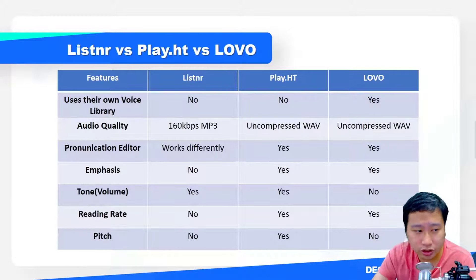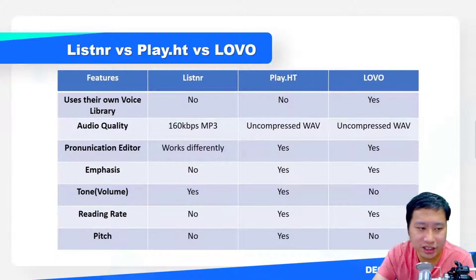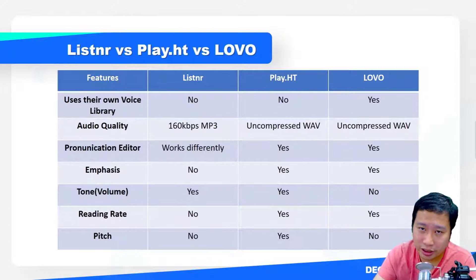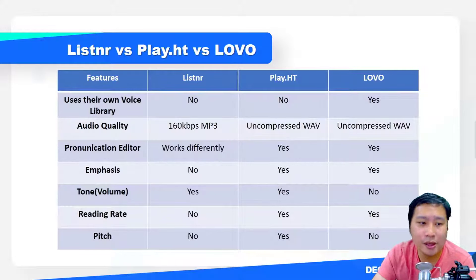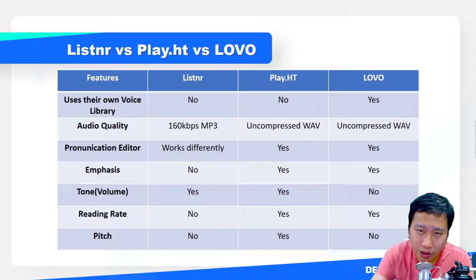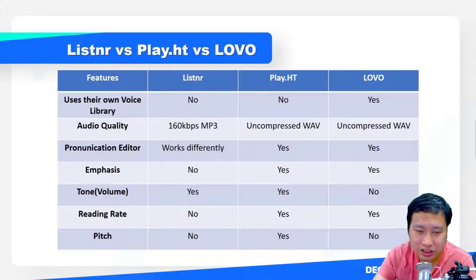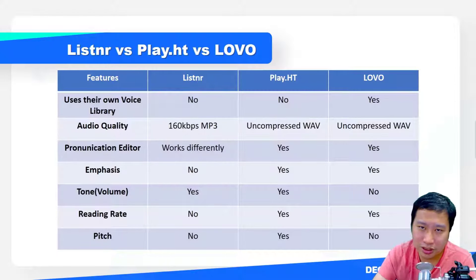For audio format, Listner gives you a 160 kbps MP3 file, while PlayHT and Lovo give you an uncompressed WAV file. With Lovo's human-like realistic voices combined with uncompressed audio quality, you get one of the more realistic-sounding results.